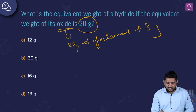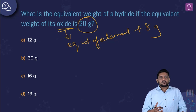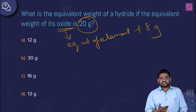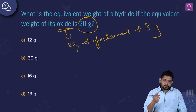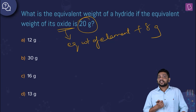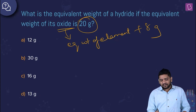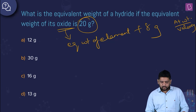We know 20 grams is the equivalent weight of the oxide compound, and the equivalent weight of oxygen is 8. The equivalent weight of a substance is the weight that combines with 1.008 grams of hydrogen, or 8 grams of oxygen, or 35.5 grams of chlorine. For elemental equivalent weight, you can use atomic weight divided by valency — oxygen has atomic weight 16 and valency 2, giving equivalent weight 8.